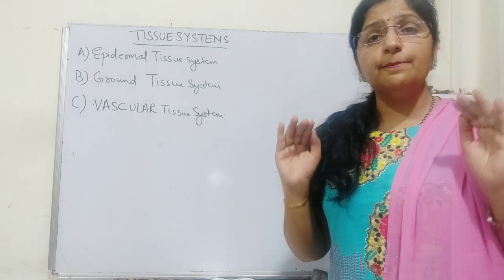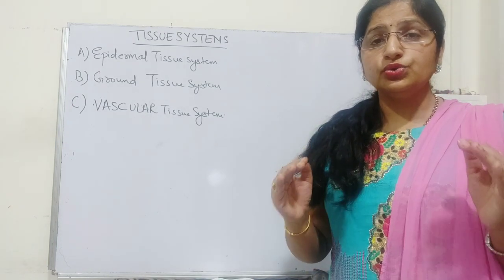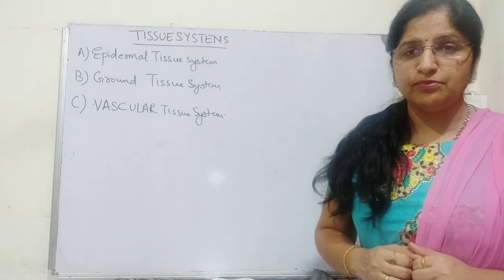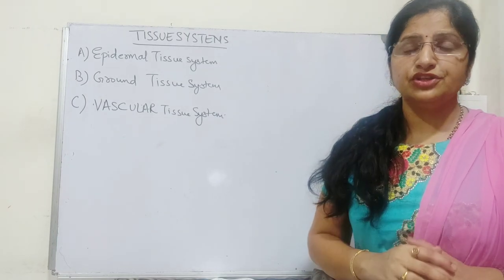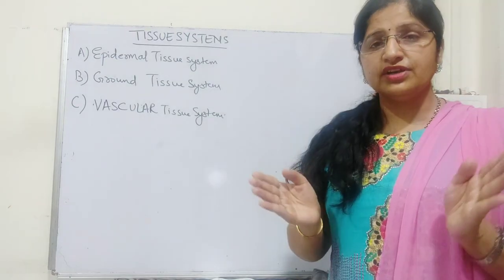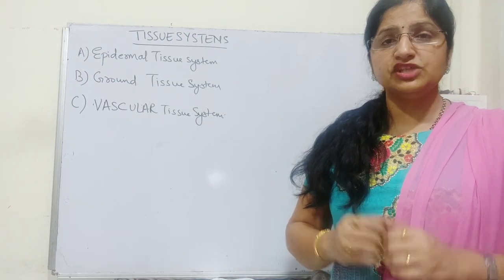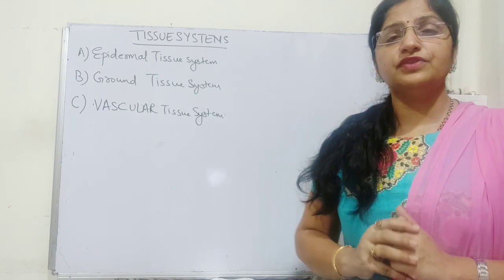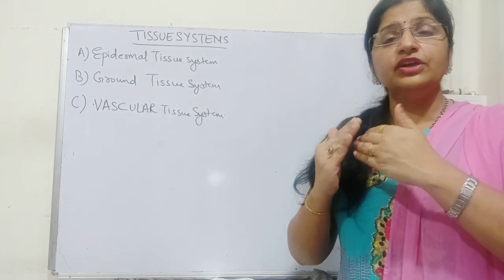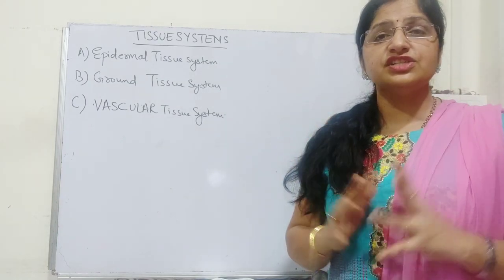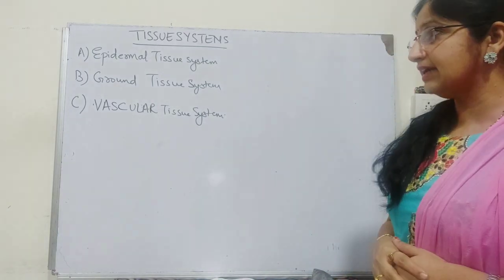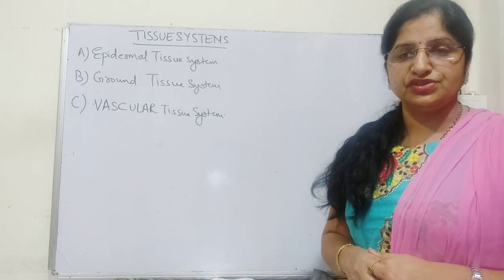To understand the complete internal anatomical features of the plant body, we look at three types of tissue system arrangements: the epidermal tissue system as the outer lining, the vascular tissue system at the center for conduction of food and water, and the ground tissue system comprising everything remaining in between.